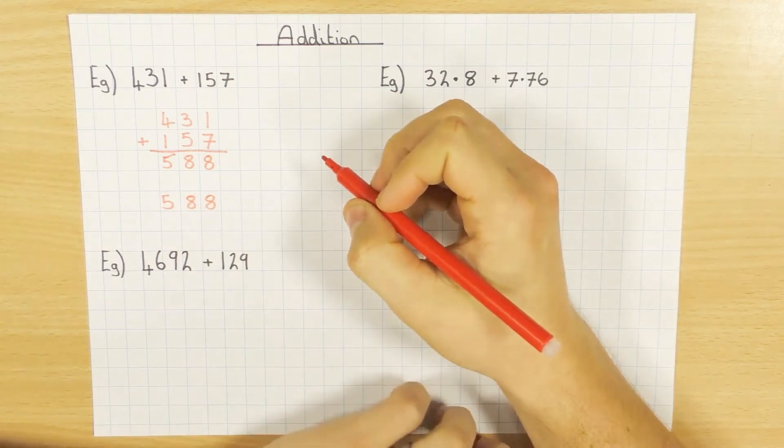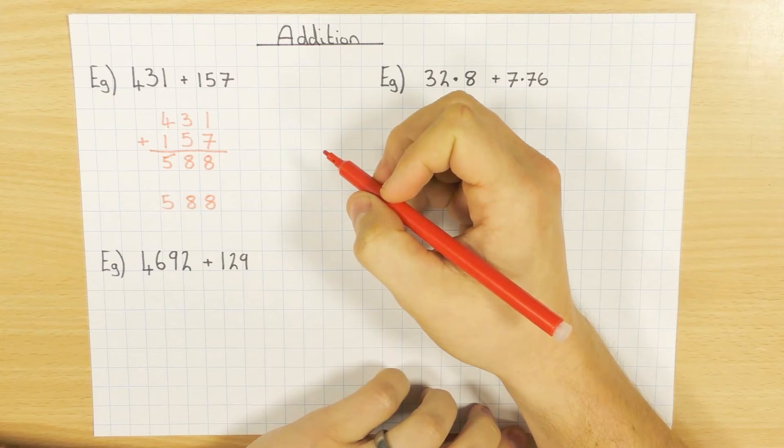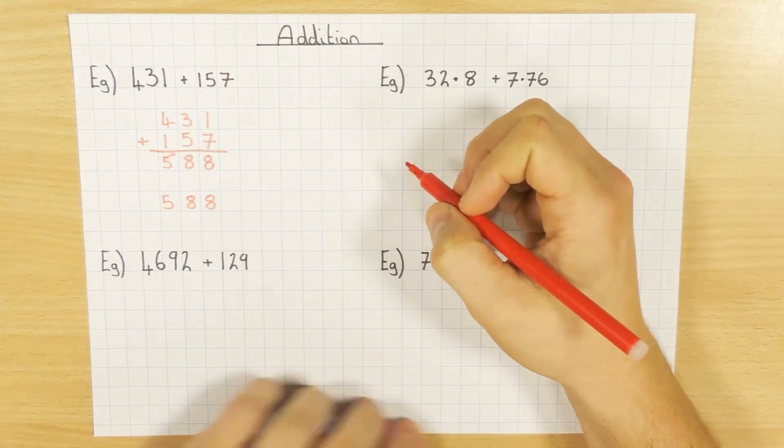Now when you're doing this in the exam, lots of people might make the odd mistake. And because they think it's addition and easy, they won't check it. So make sure you do check your work. Most people have time. Just redo the calculation. Make sure you haven't made any silly errors.